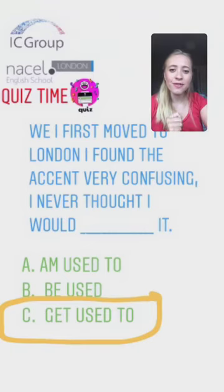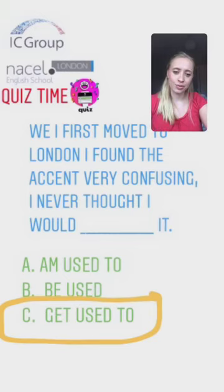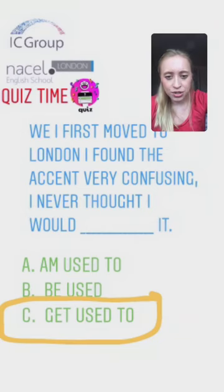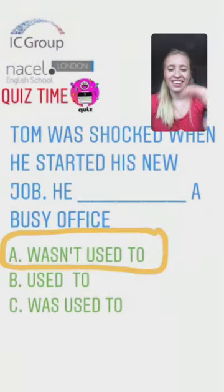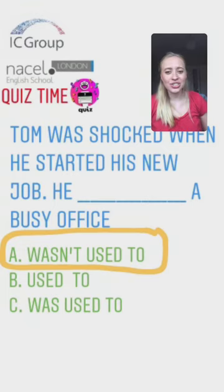Let's look at the answers. For the question 'When I first moved to London I found the accent very confusing — I never thought I would blank it', the answer is C: 'get used to it'. This is the process of something becoming more familiar. Well done if you got that correct. For 'Tom was shocked when he started his new job — he blank a busy office', the correct answer is A: 'He wasn't used to a busy office'.